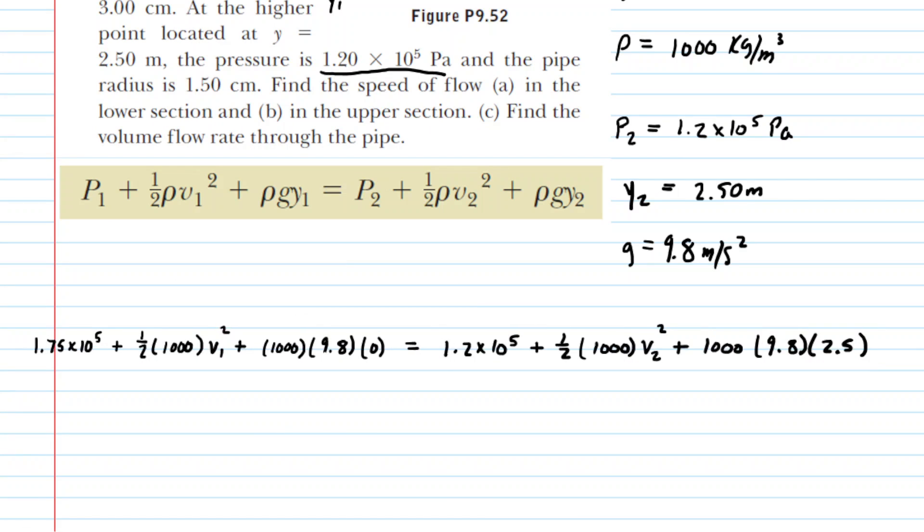So all of the values have been plugged in, and it's quite a lengthy equation. We can simplify it just a little bit. We see right here that we're multiplying by 0, so this is going to 0 out. We're going to rearrange this equation. Why don't we go ahead and subtract this 1.2 times 10 to the power of 5 from both sides. That'll cancel it out on the right-hand side. On the left-hand side, we'll end up with 0.55 times 10 to the power of 5.